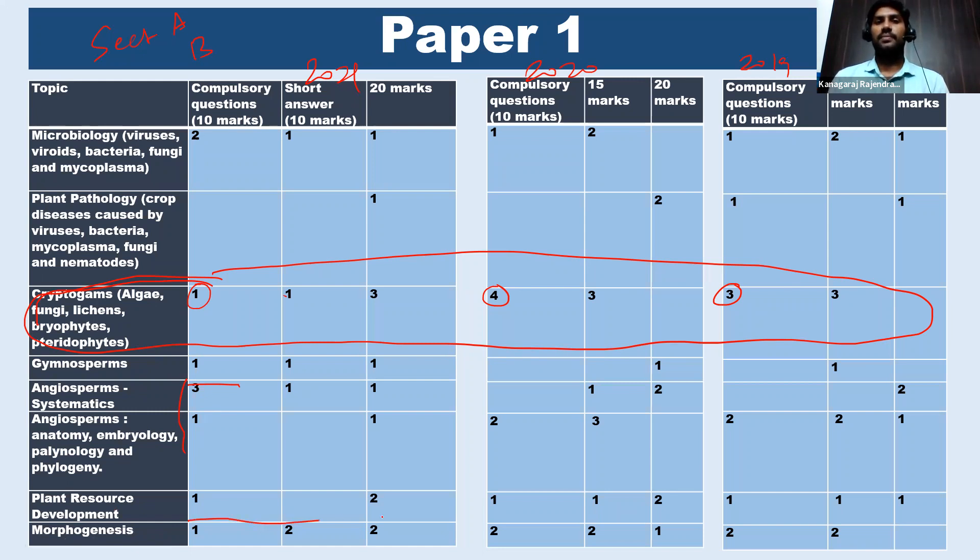Again, if you see, there are more number of questions from morphogenesis. So based on this pattern, we can assume that these three topics are very important: morphogenesis, angiosperms, and cryptogams. So for paper one, these three topics are very important. We have to read the entire syllabus of these three subjects. And here we can give less importance to plant pathology. I will give you one interesting fact at the end of this video, after discussing paper two, why there are less number of questions from plant pathology.